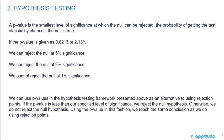If the p-value is given as 0.0213 or 2.13%, we can reject the null at 5% significance, we can reject the null at 3% significance, we cannot reject the null at 1% significance.